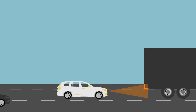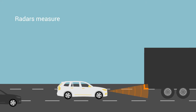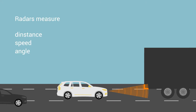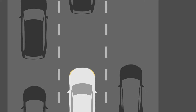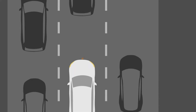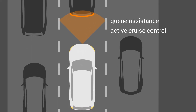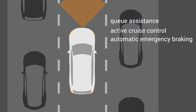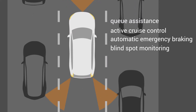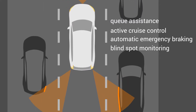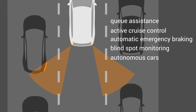In the automotive industry, radars measure distance, speed and angle of surrounding objects. Radars are used in cue assistance, active cruise control, automatic emergency braking and blind-spot monitoring. Autonomous cars rely on radars.